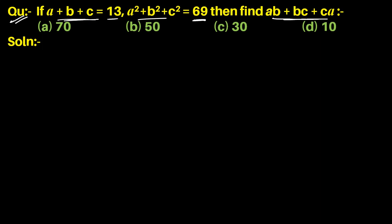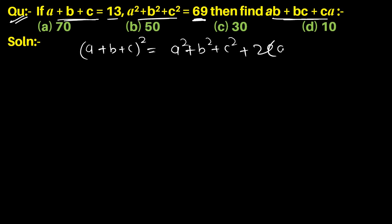We know that a plus b plus c whole square equals a squared plus b squared plus c squared plus 2(ab plus bc plus ca). Substituting the given values: 13 squared equals 69 plus 2(ab plus bc plus ca).